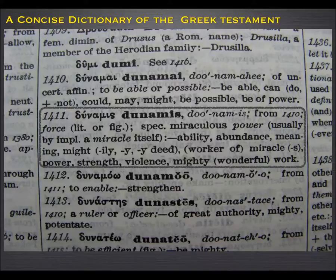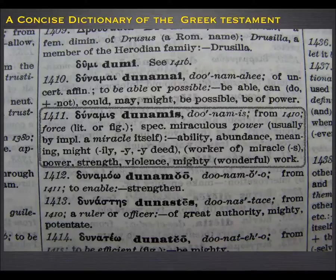Was there a way then of actually finding out the sense of what dunamis meant? Well, there was, but it was a very long-winded way. You'd have to work your way through this list — you'd start off with ability and find out where it had the Strong's number 1411 against it, and then make a reference about that Bible text on a piece of paper. Then you'd do the same thing for abundance, then meaning, and work your way through the list. As a young pastor I spent hours doing this, ending up with pages of Bible references, then I would sit and think about them and try to get a feel for the way the Bible used that particular word.